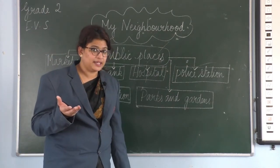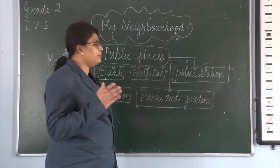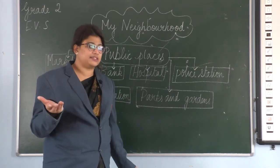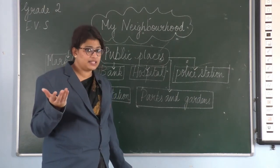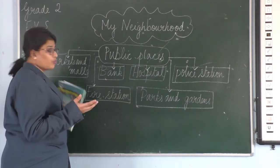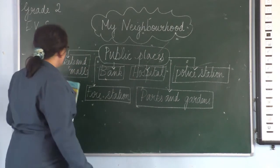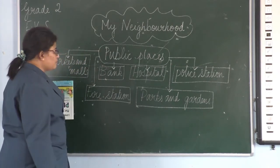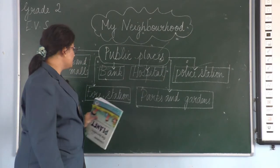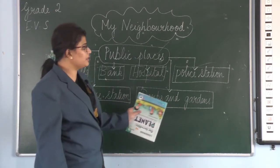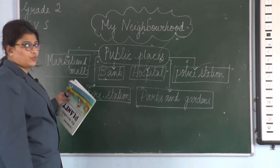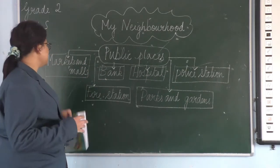Public places means places where everybody can go. These are the different public places: markets and malls, bank, hospitals, police station, fire station, parks and gardens. We are going to see what all these places are.